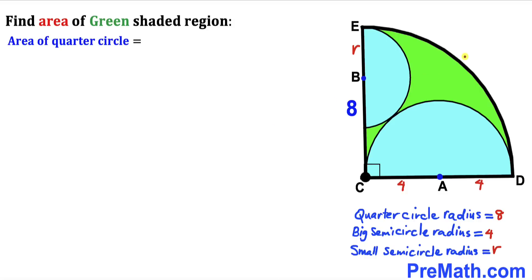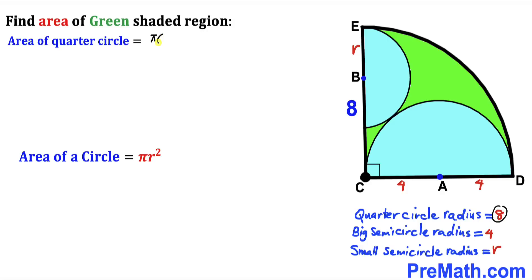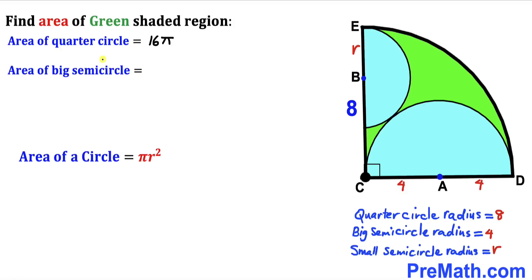Let's calculate the area of the quarter circle first. Recalling the area formula: area equals pi r squared. Since the radius is eight units, the area of the quarter circle is pi times eight squared divided by four, which equals 64 pi divided by four, giving us 16 pi.